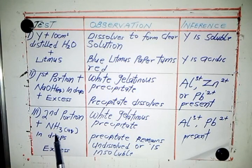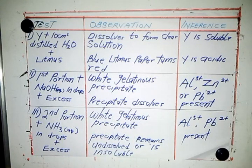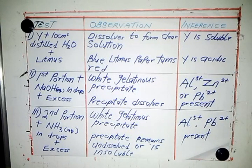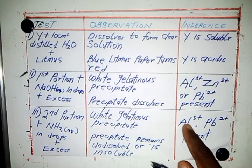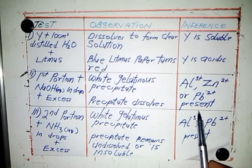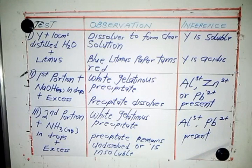Second portion plus aqueous ammonia in drops, then in excess. You get almost the same observation — a white gelatinous precipitate — but in excess the precipitate remains, meaning it is insoluble. With this observation, the inference would be aluminium ions and lead ions present.